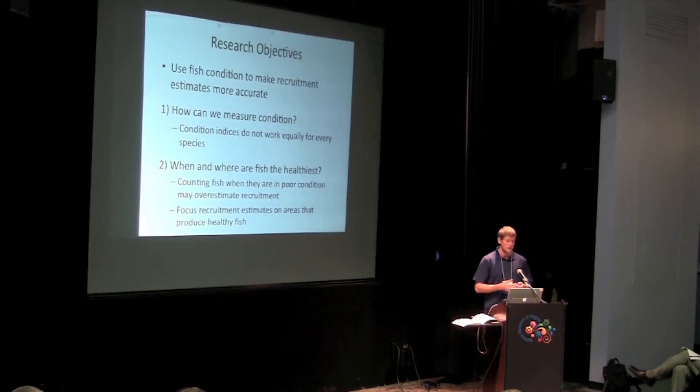Condition in juveniles changes throughout the year. If we end up counting those fish for estimates of recruitment when they're in poor condition, we may be overestimating it because those poor condition fish may die before reaching adulthood. Similarly, not all areas are created equally, so we should probably focus our recruitment estimates on those areas that produce healthier fish that are likely to survive.